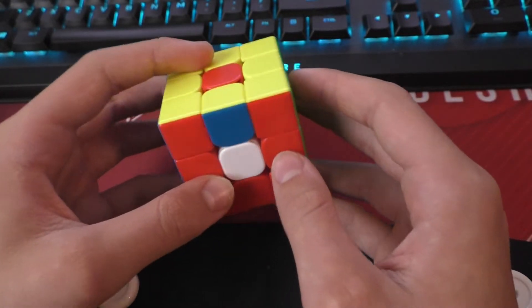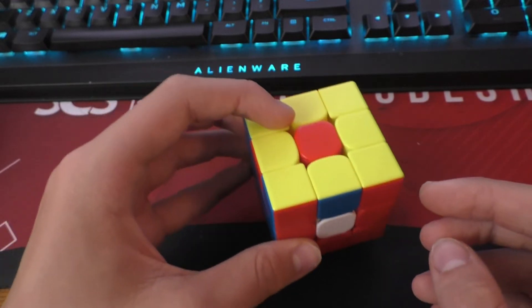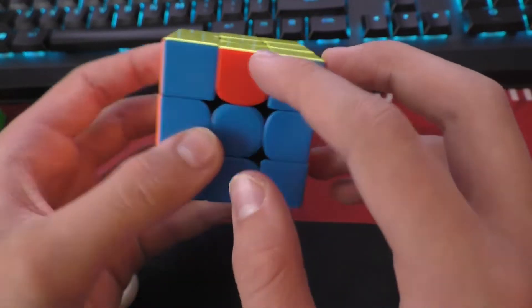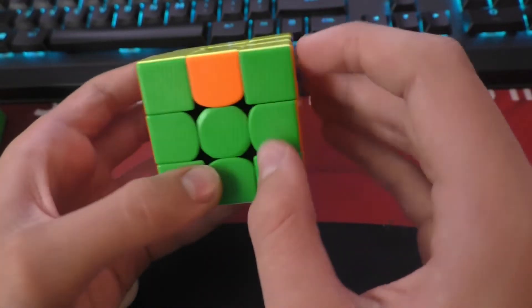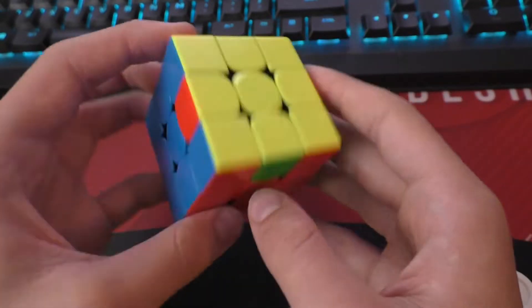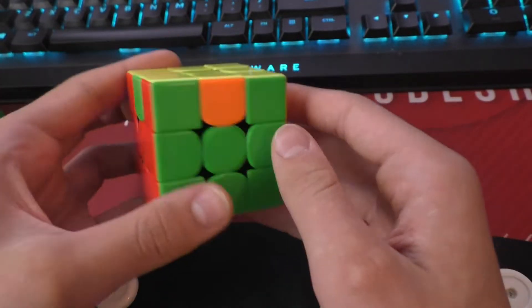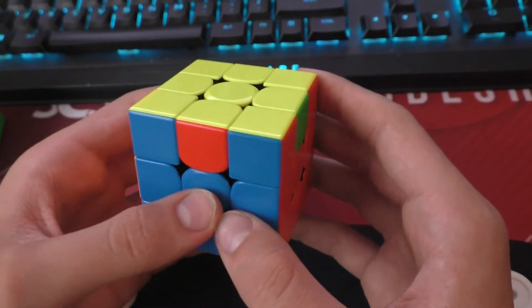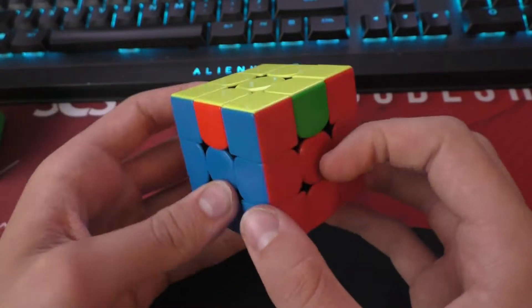This would be an impossible edge PLL if it existed. It would look something like this. The red edge has moved to blue, which has moved to orange, which has moved to green, which has moved to red. And this is an impossible PLL. This is called a 4-cycle, but this is an impossible 4-cycle because it's impossible to solve.